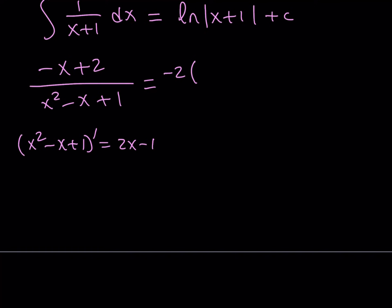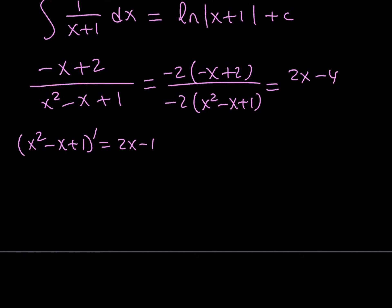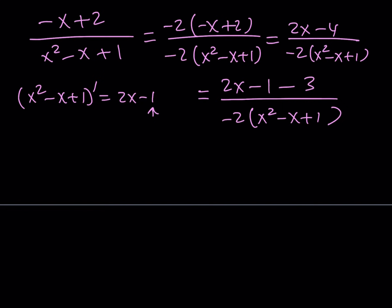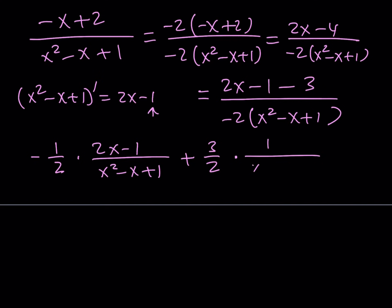What we can do is multiply the top and bottom by negative 2. Distributing the top gives 2x minus 4 over the denominator. We can then write the numerator as (2x minus 1) minus 3, all over negative 2 times (x squared minus x plus 1). Separating this, we get negative 1/2 times (2x minus 1) over (x squared minus x plus 1), plus 3/2 times 1 over (x squared minus x plus 1).